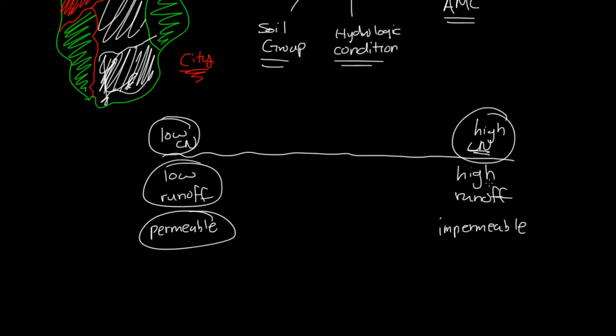And a high curve number means there is high runoff, and a high runoff means that the soil is impermeable, or that the soil or the ground condition there is not absorbing the water too well. And therefore, there is more water leaving that area, hence high runoff.